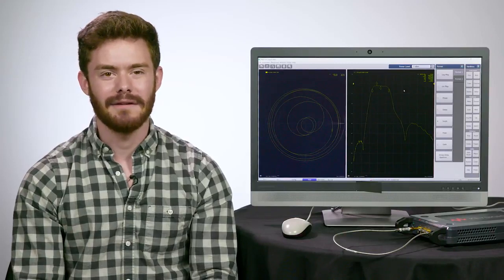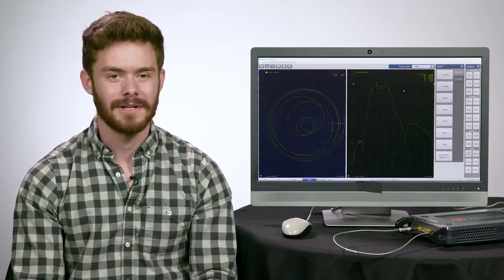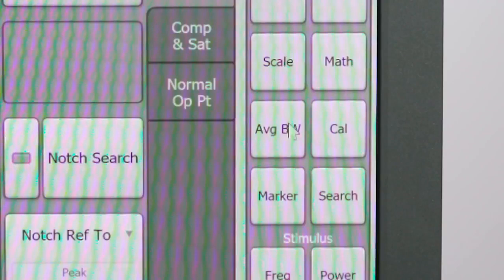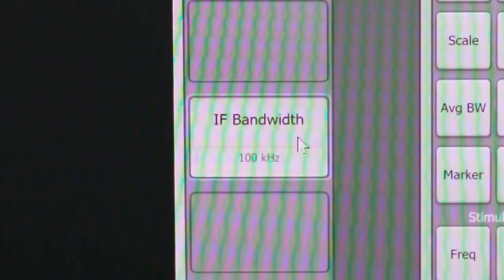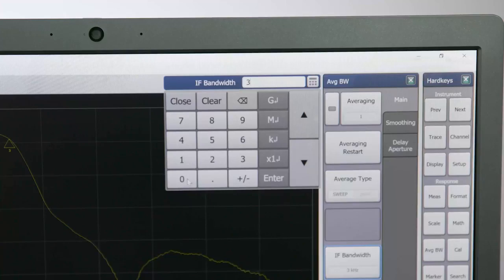The wider the IF bandwidth is set, the faster the measurements can be performed. So let's set the IF bandwidth to 300 kHz by going to Average Bandwidth, IF bandwidth, and enter that frequency.